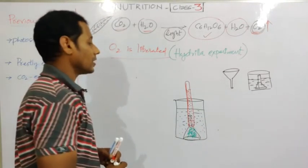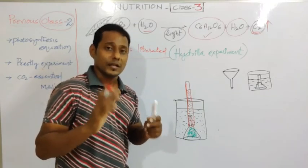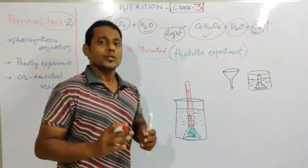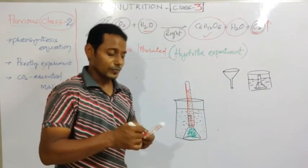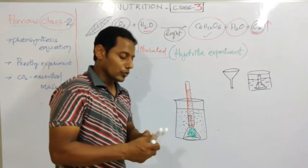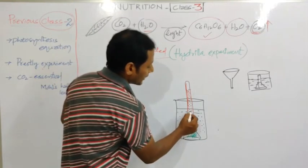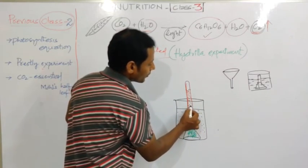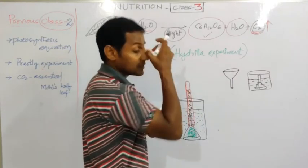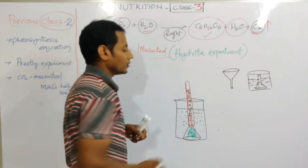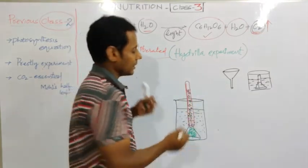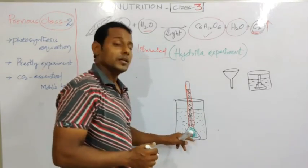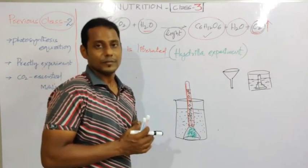You keep this entire experimental setup under sunlight for two to four hours, as we did in the previous experiments. After two to four hours of the photosynthesis process, you can observe fine bubbles coming from the hydrilla plant and going up into the test tube. The hydrilla plant releases oxygen bubbles, which rise through the water and collect at the top of the test tube.